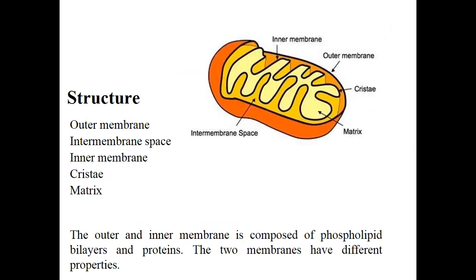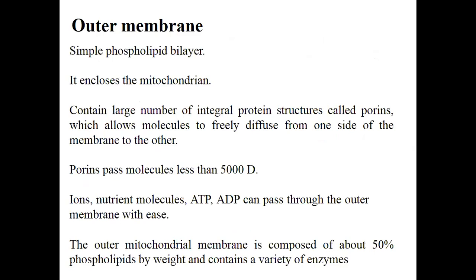In structure, mitochondria have an outer membrane, inner membrane, inner membrane space, cristae, and matrix. Both the outer and inner membranes are composed of a phospholipid bilayer with proteins, but have different properties and functions. The outer membrane has a phospholipid bilayer and encloses the mitochondrion. It contains a large number of integral protein structures known as porins, which allow molecules to freely diffuse across the membrane — similar to the concept of selective permeability in the cell membrane.